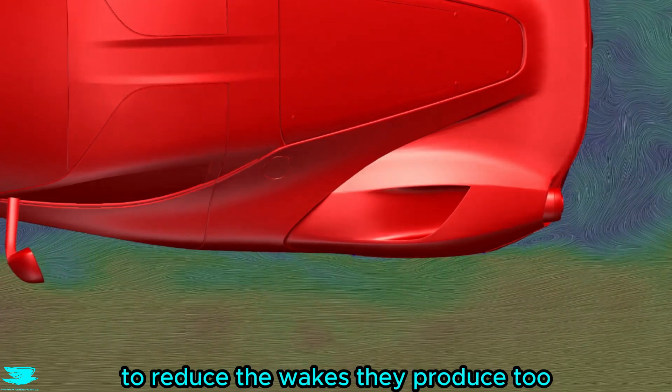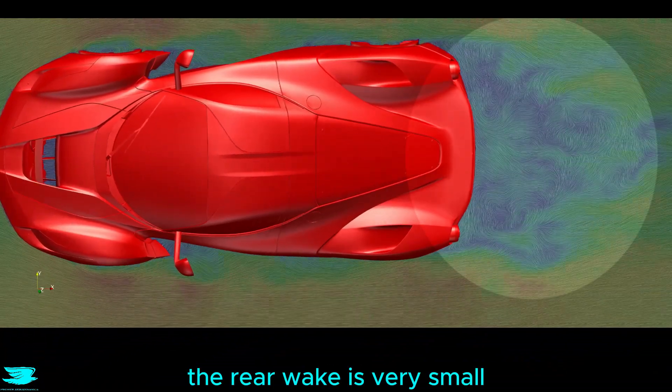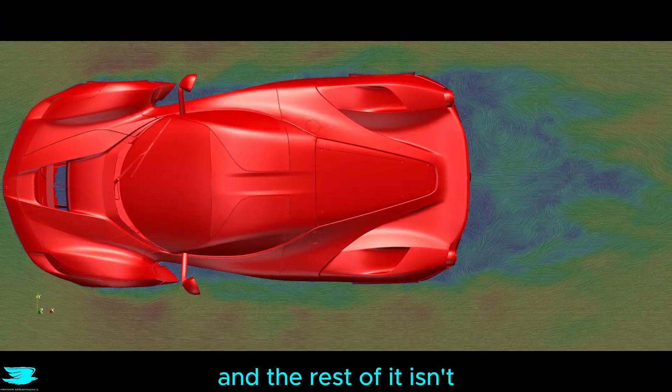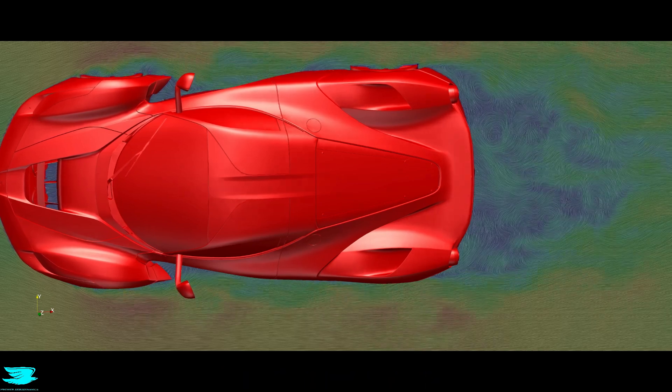The rear wheels use a similar trick to reduce the wakes they produce too. Overall, the rear wake is very small, with the bulk of it dying out only one quarter length downstream, and the rest of it isn't going past about half a car length downstream, which is almost unheard of for a supercar.